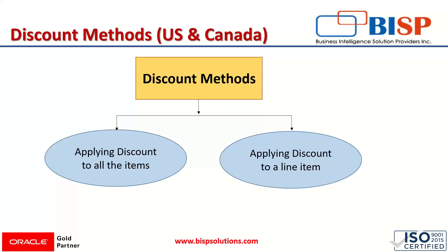Based on the relationship with the customer, they are entitled for certain kinds of discount. Discount can be set as a fixed amount or percentage for items, and it can also be specified across a group of items or for a single line item. In NetSuite, we have two kinds of discount methods: we can apply the discount method to all the items or to a group of items, or we can apply the discount to a specific single line item only.